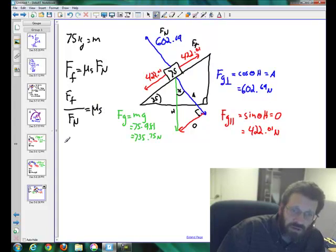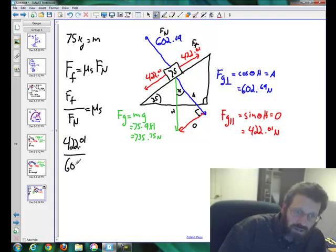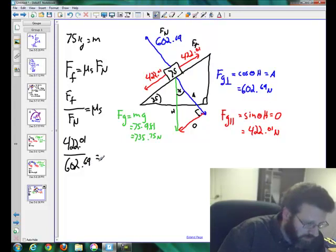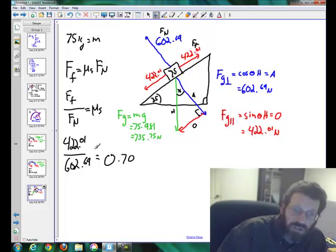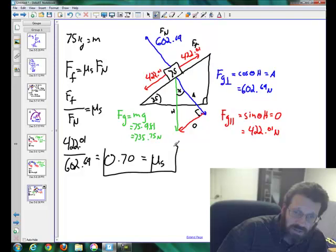Put in your numbers, so that is 422.01 divided by 602.69 equals the coefficient. I believe I worked out was 0.70, and there is no units for that. So the coefficient of static friction for this hill quite simply is 0.70. That's our final answer.